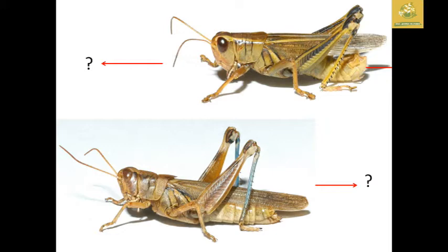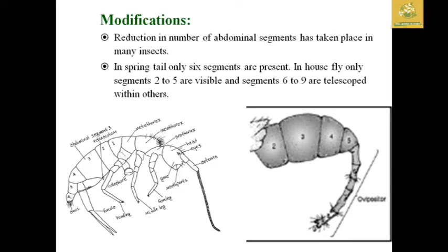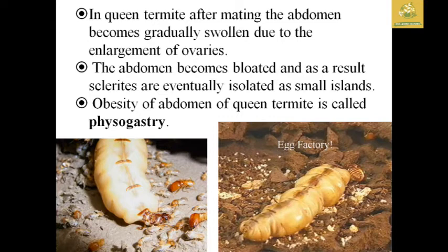There are modifications in the number of abdominal segments in different insects. In springtails only six segments are present; in houseflies only two to five segments are visible, and the remaining six to nine are telescoped due to internal changes. In queen termites during mating, the abdomen becomes gradually swollen due to enlargement of the ovaries. This obesity of the abdomen in queen termites is known as physogastry.